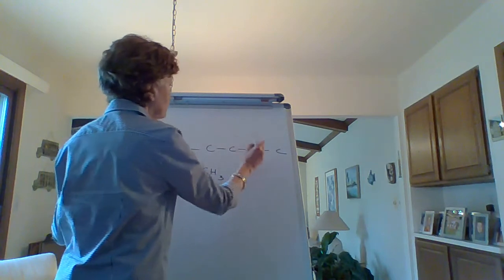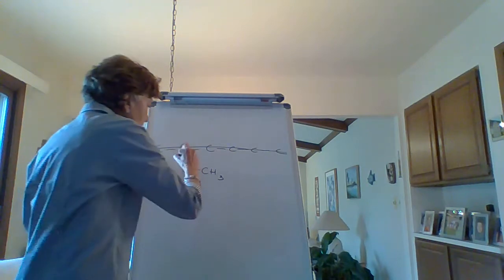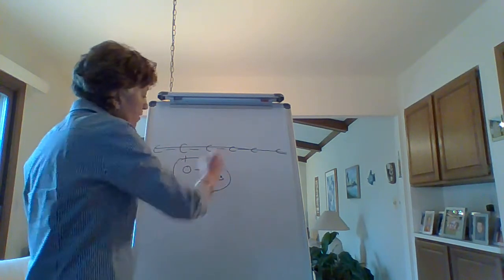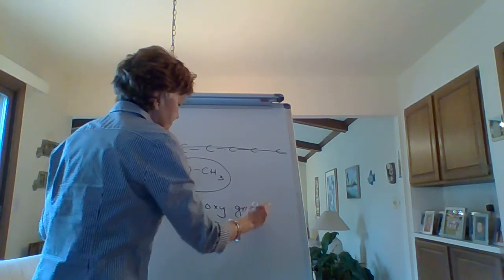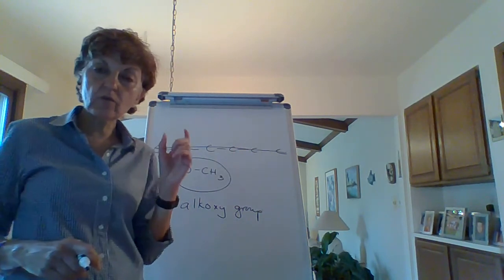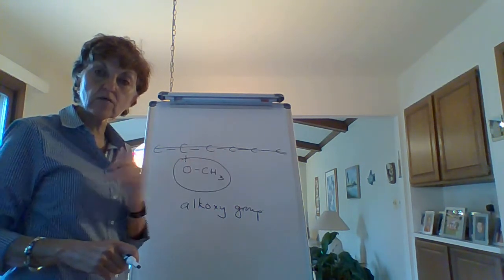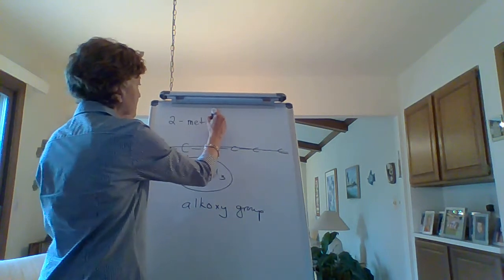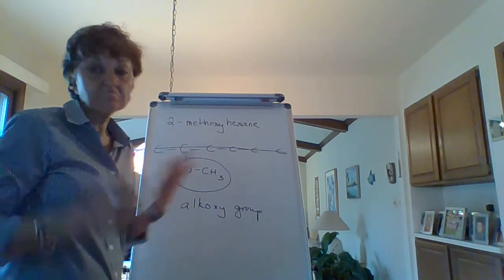I've got this long parent chain—one, two, three, four, five, six. The parent is hexane, and this is a substituent attached to the parent. We call this an alkoxy group. You take the alkyl name, drop the YL, and throw in OXY. This would have been methyl, so it's methoxy. This would be 2-methoxyhexane.